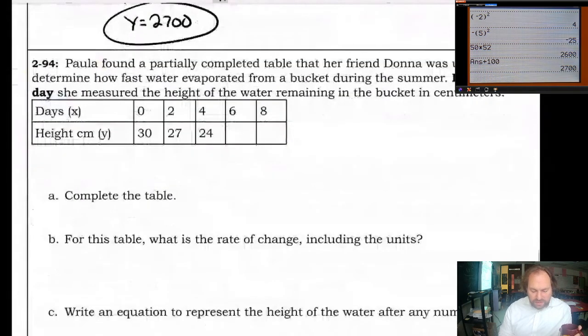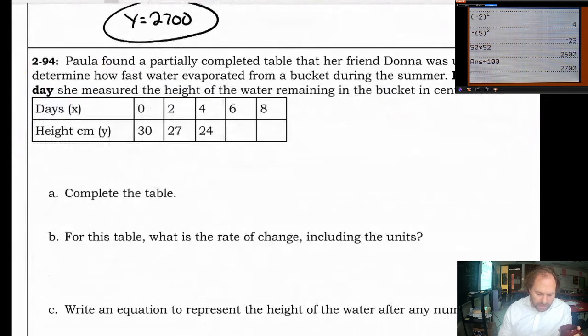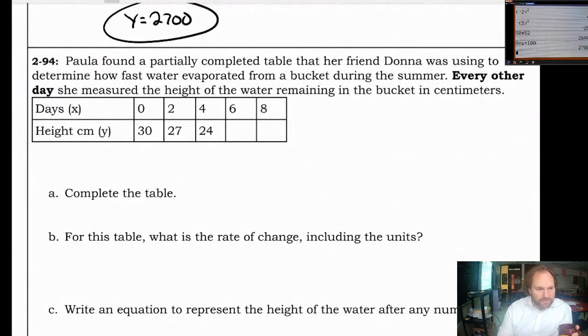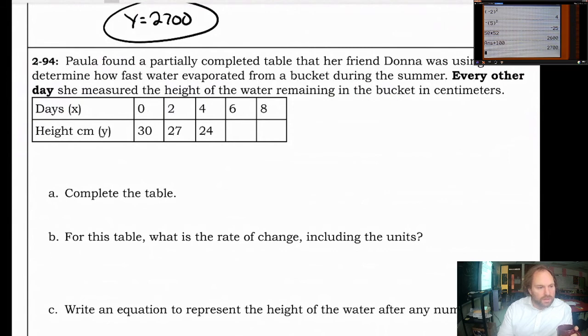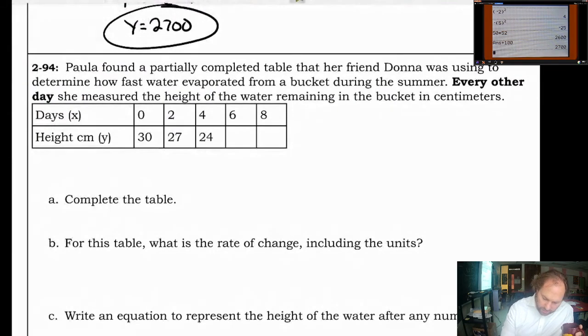294, Paula found a partially completed table that her friend Donna was using to determine how fast water evaporated from a bucket during the summer. Let's see. Every other day she measured the height of water. Every other day is important there because it looks like we have 2 and 4 and 6 and 8 going on there. She measured the height of water remaining in the bucket in centimeters. The first thing we've got to do is complete the table. So what's going on with Y? We're going down by 3, down by 3. So we'll keep that pattern going down by 3. 21 and then 18 I think would work there. So that's done. Check.